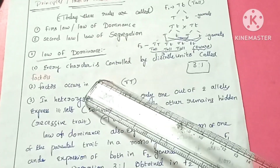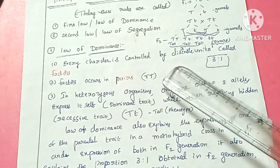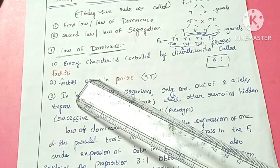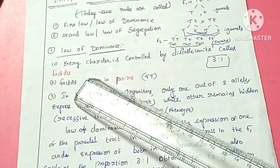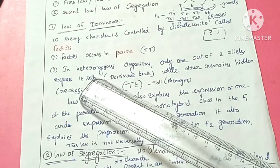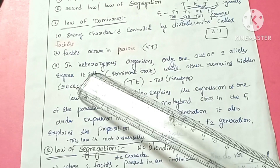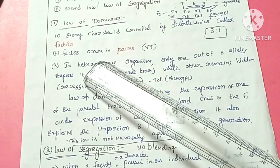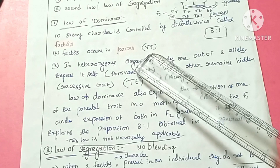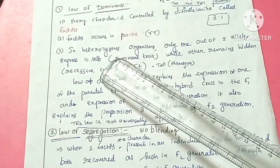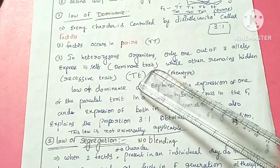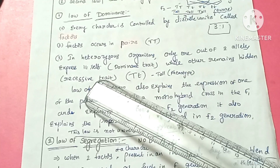The first law — the law of dominance — states that every character is controlled by discrete units called factors. These factors occur in the form of pairs. For example, tallness is represented as capital T capital T, and dwarfness as small t small t in pair form. In heterozygous organisms, only one out of two alleles expresses its dominance.